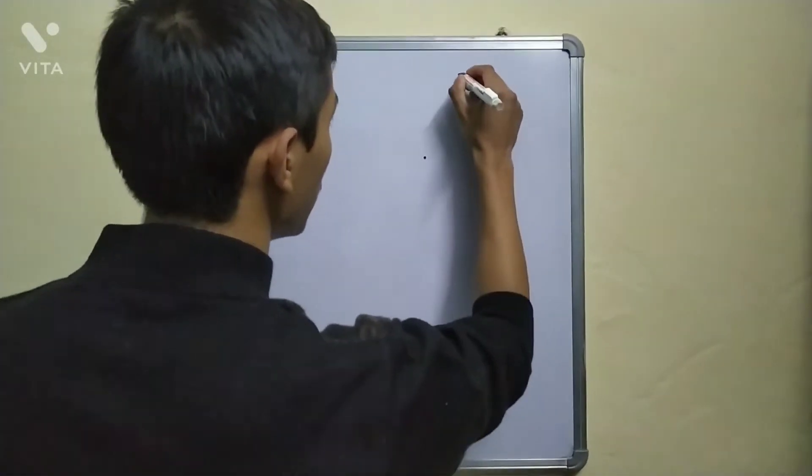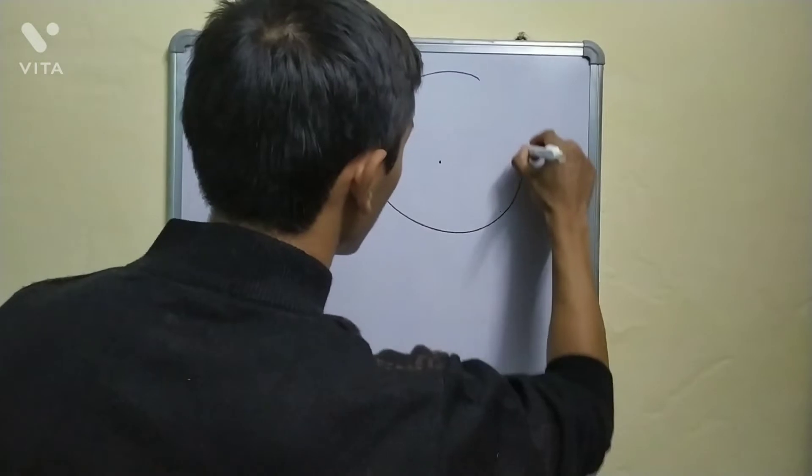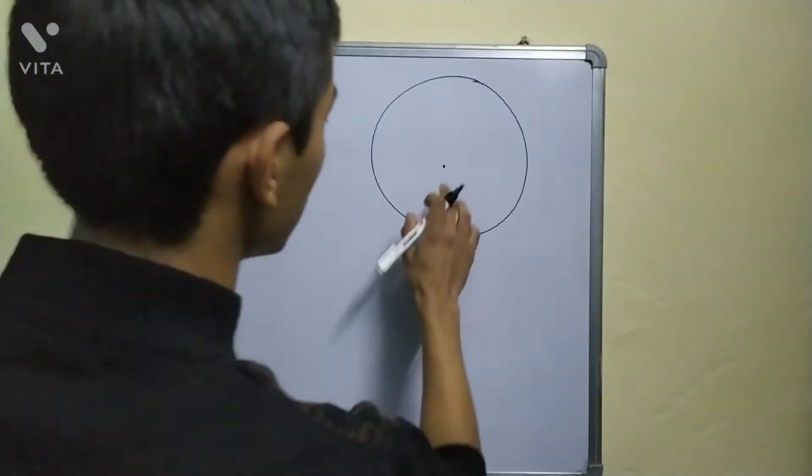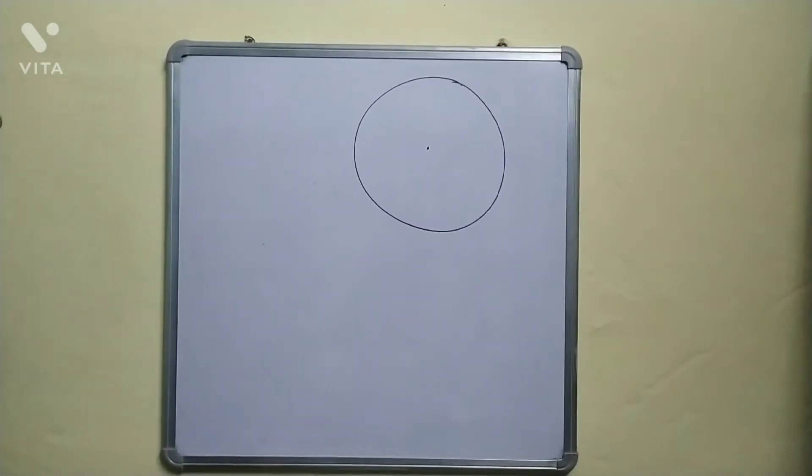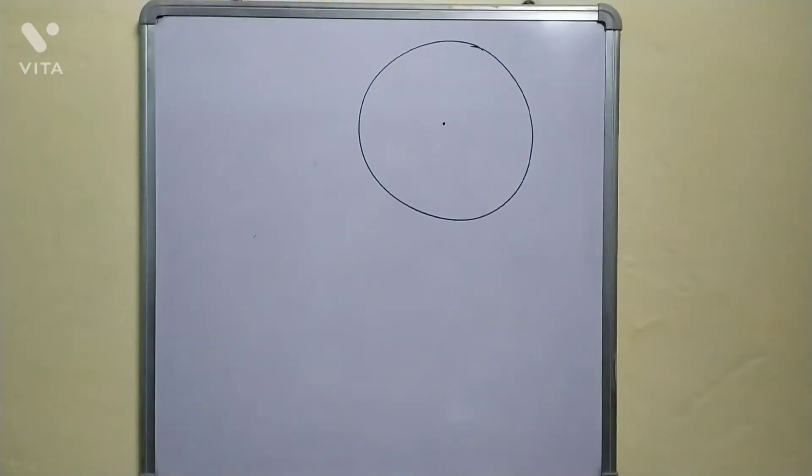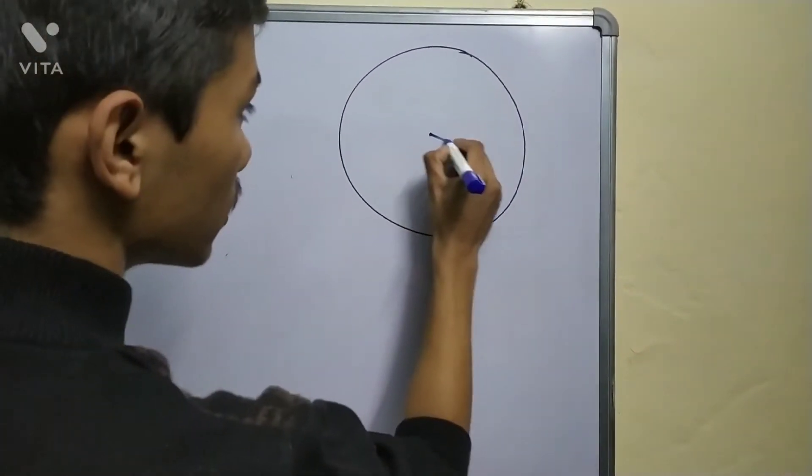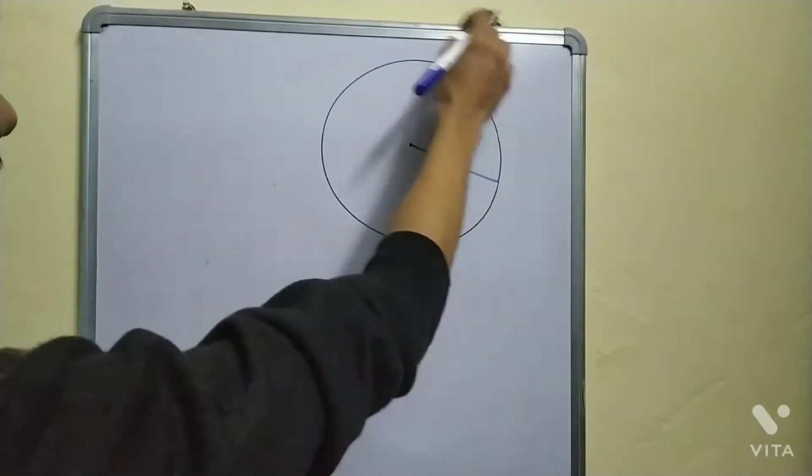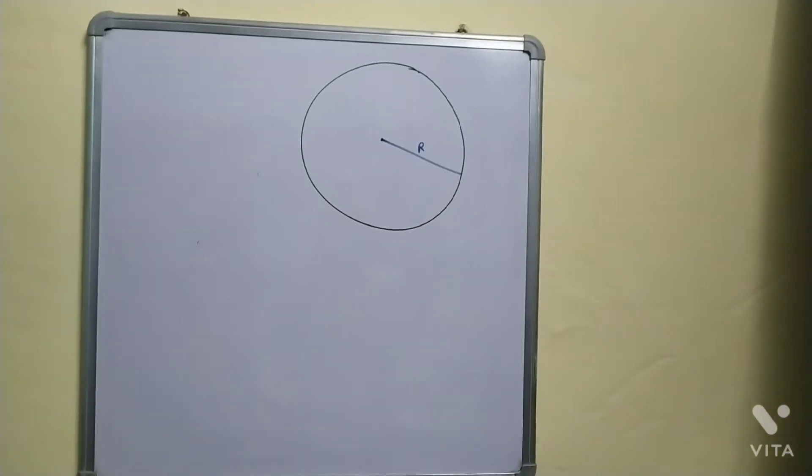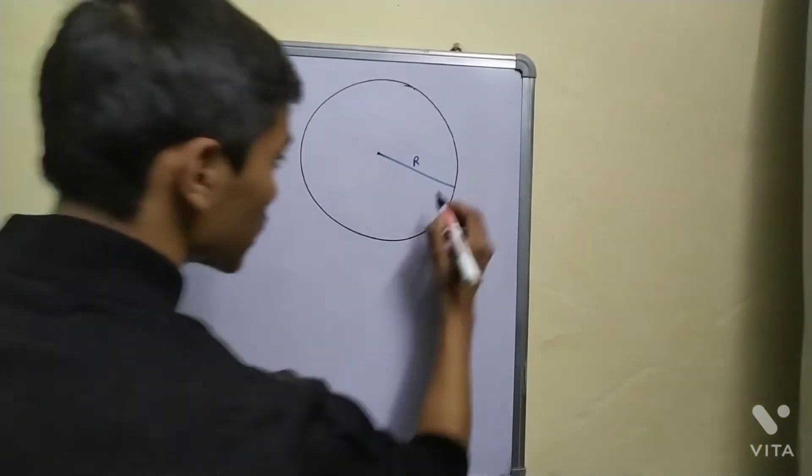So here is our star and here is our planet going around the circle, this looks more appropriate. Now this is the radius around which the planet is revolving, this is the planet.